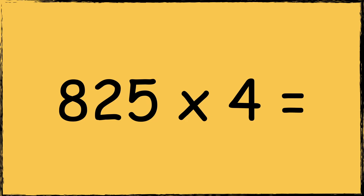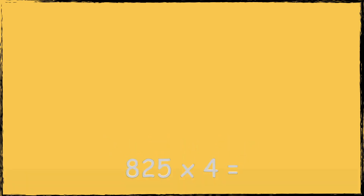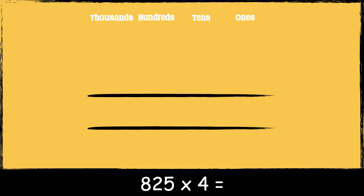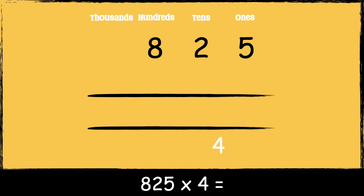Here's the next calculation: eight hundred and twenty-five times four. First we make sure the numbers are lined up accurately. The number 825 has five ones, two tens, and eight hundreds. The number four has four ones. Now that we're set up, we're ready to multiply.